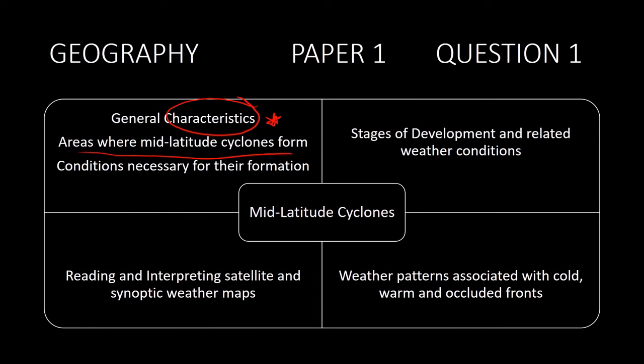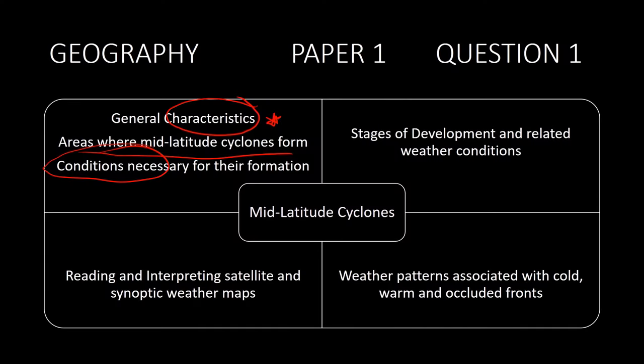Areas where mid-latitude cyclones form — usually you will use a synoptic weather map to identify the geographic location of a mid-latitude cyclone. Conditions necessary for their formation is crucial. Stages of development is another important aspect. With mid-latitude cyclones we're talking about four clearly distinguished stages. Don't confuse the tropical cyclone stages with the mid-latitude stages. Depending on which textbook you are using, some identify three, four, or five stages — what's most important is being able to describe what happens in those stages, especially the mature stage with the development of the cold and warm fronts. The characteristics of each stage are what we define from descriptions on the diagram.